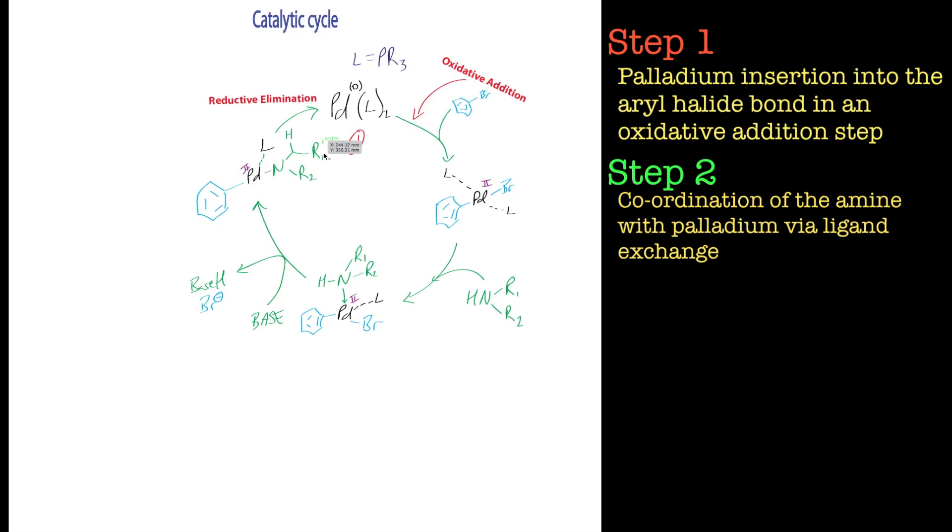Then if we add base, or the base might already be present because we have a catalytic cycle anyway, what happens is the base will take off a proton here. As it's coordinated, the electron density is coming away from this nitrogen-hydrogen bond, making this even more acidic. The nitrogen will donate electrons into palladium and weaken that bond, so it's really acidic and a base can easily pick it up. As it does that, we lose a bromine with a base and we get insertion of the nitrogen instead of the bromine, like a substitution reaction. Now we've got a covalent bond between palladium and nitrogen. We still have that ligand coordinated, but now we've got HBr in solution mopped up by the base.